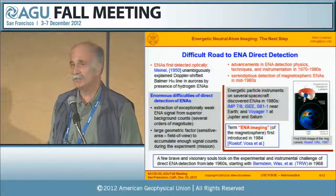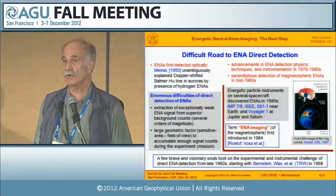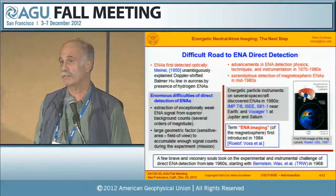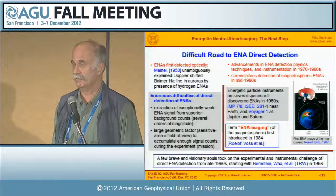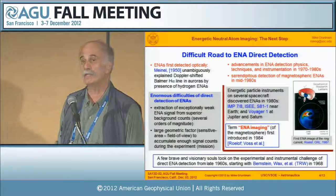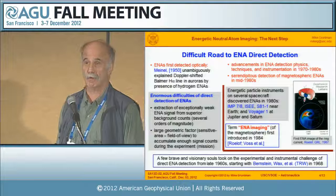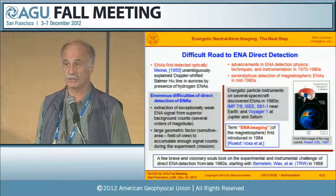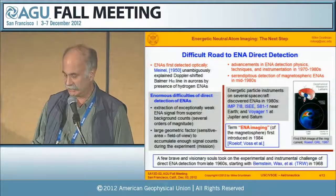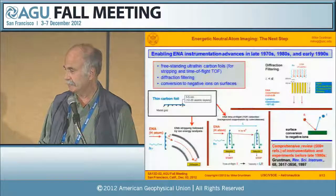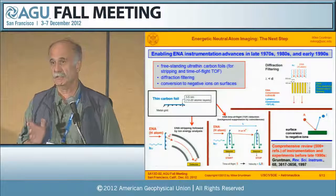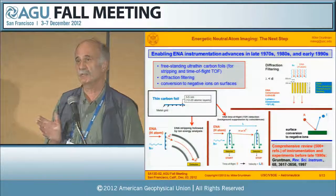The term ENA imaging was coined in 1984 by Hank Voss and Ed Roloff. In 1987, ENAs got to the cover of the JGR, showing for the first time the potential of the technique.